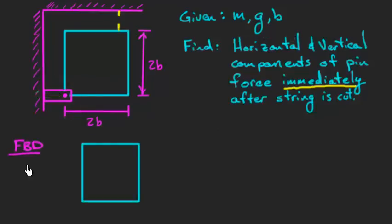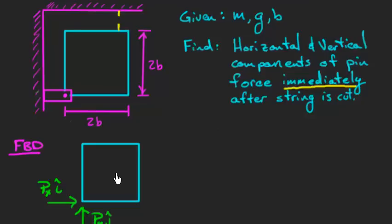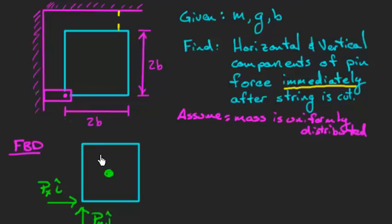Starting with a free body diagram: the plate is free to rotate about the pin, but the pin keeps that corner fixed in space. So I need a force PX in the i-hat direction and a component PY in the j-hat direction. The plate has weight, and assuming uniformly distributed mass, that weight acts straight down through the center of the plate.